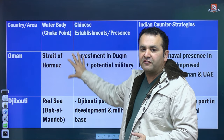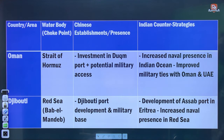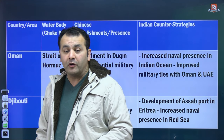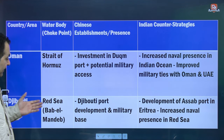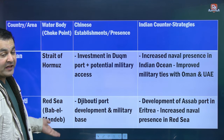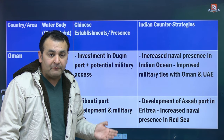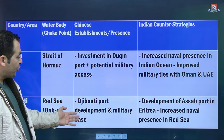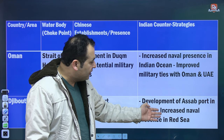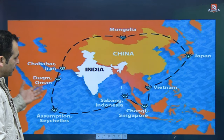Then there is Oman. The most important thing here is the choke point called the Strait of Hormuz — investments in Duqm port and potential military access by China. India is trying to improve military ties with Oman and UAE. Then Djibouti on the Red Sea — the Bab-el-Mandeb strait — which is in news due to the Houthis attacking maritime ships in this region from Yemen. China has developed a port and military base in Djibouti, and India's idea is to develop a support base in Eritrea with increased naval presence in the Red Sea. This is your diamond string.